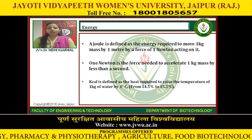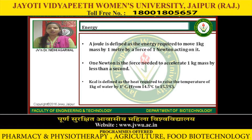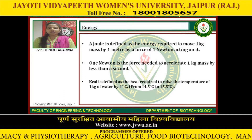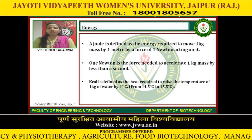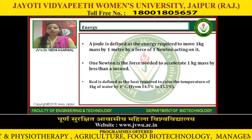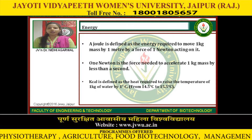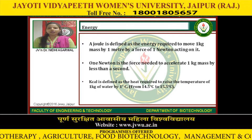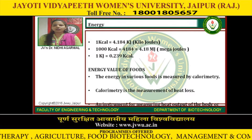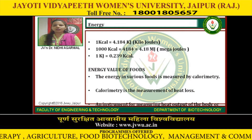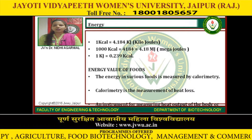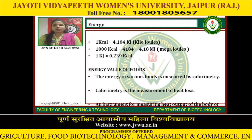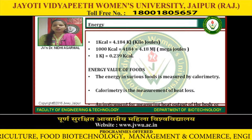These units are defined as follows. A Joule is defined as the energy required to move 1 kg mass by 1 meter by a force of 1 Newton acting on it. 1 Newton is the force needed to accelerate 1 kg mass by 1 meter per second squared. Kilocalorie is defined as the heat required to raise the temperature of 1 kg of water by 1 degree Celsius. 1 kcal is equal to 4.184 kJ. 1000 kcal is equal to 4184 kJ, that is 4.18 MJ. 1 kJ is equal to 0.239 kcal.